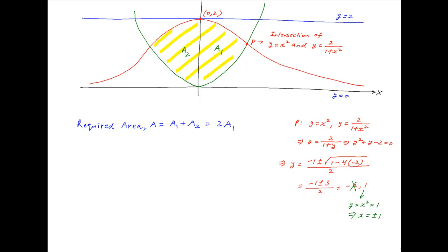Since y = x², we have x² = 1, so x = ±1. In the first quadrant where P lies, x = +1, and therefore the coordinates of P are (1, 1).